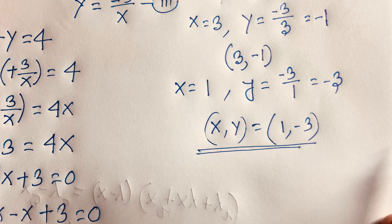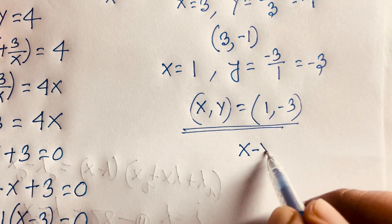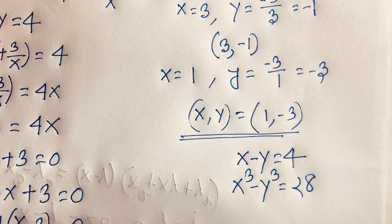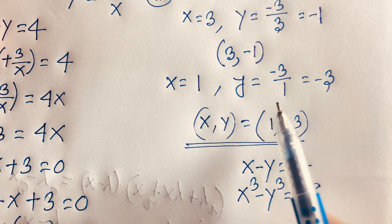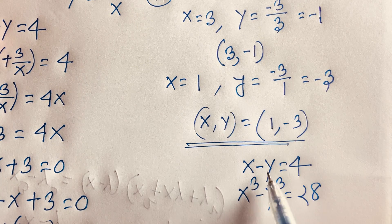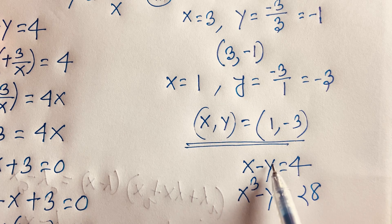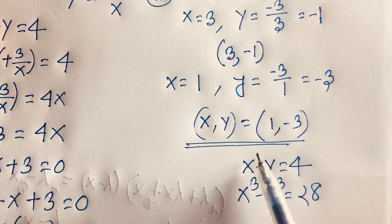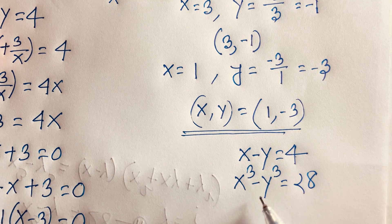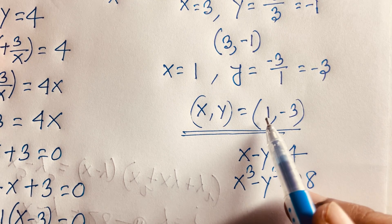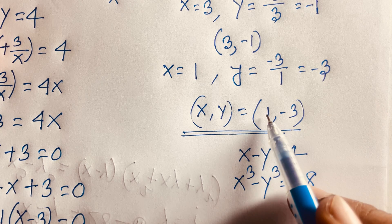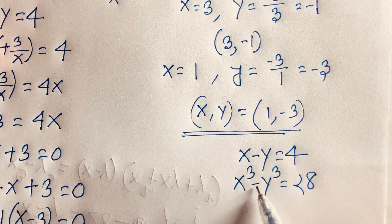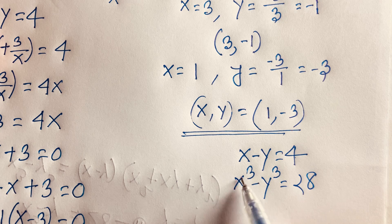Let's verify. For x minus y equals 4: when x equals 3 and y equals negative 1, we get 3 minus negative 1 equals 3 plus 1 equals 4. When x equals 1 and y equals negative 3, we get 1 minus negative 3 equals 1 plus 3 equals 4. Now checking x cubed minus y cubed equals 28: for x equals 1, y equals negative 3, we get 1 cubed minus negative 3 cubed equals 1 minus negative 27 equals 1 plus 27 equals 28.